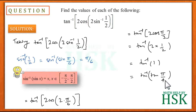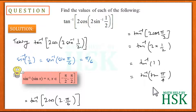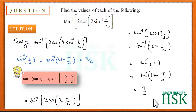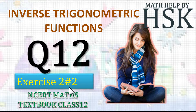Now tan⁻¹(1) can be written as tan⁻¹(tan(π/4)), applying the same logic used earlier. The tan and tan⁻¹ cancel out, giving us π/4, which is the required answer.